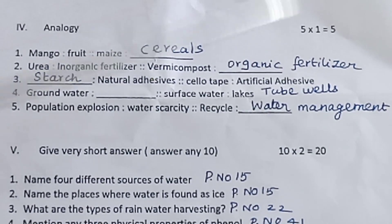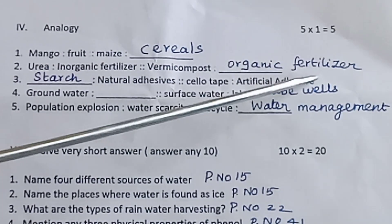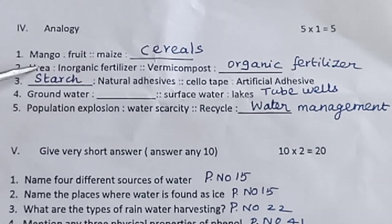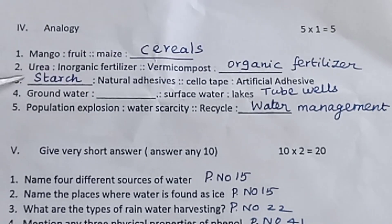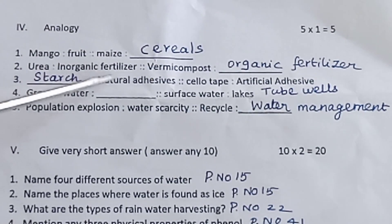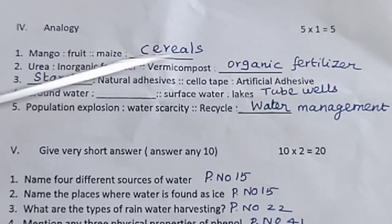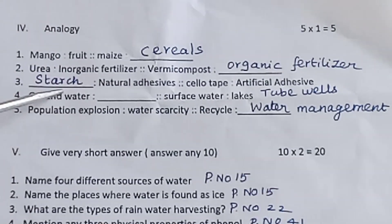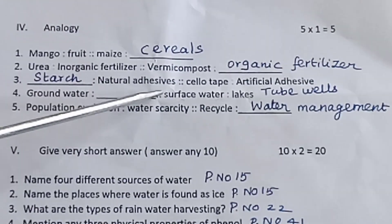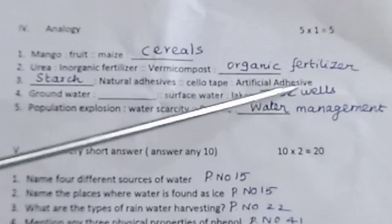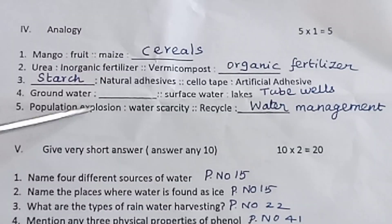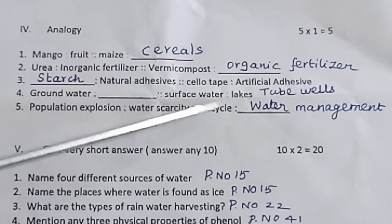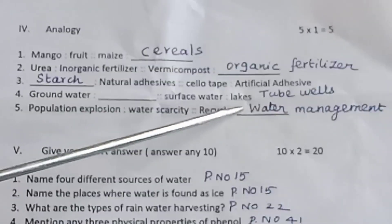Room letter 4, analogy. 5 into 1 is equal to 5. Mango: Fruit. Mice: Cereals. Urea: Inorganic fertilizer. Vermicompost: Organic fertilizer. Starch: Natural adhesives. Cellotape: Artificial adhesives. Ground water: Tubules. Surface water: Lakes. Population explosion: Water scarcity. Recycle water management.